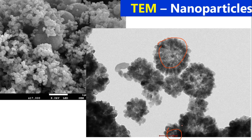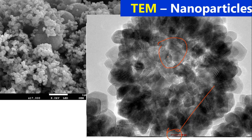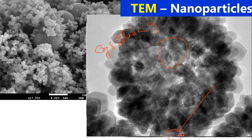At twenty nanometers, that big particle becomes visible. Zooming in further, the grains are now becoming visible. As explained previously, a crystallite is the smallest single crystal unit, then we have grains, and then particles. Here the grains are now getting visible — this is one grain here, and there is another grain here.